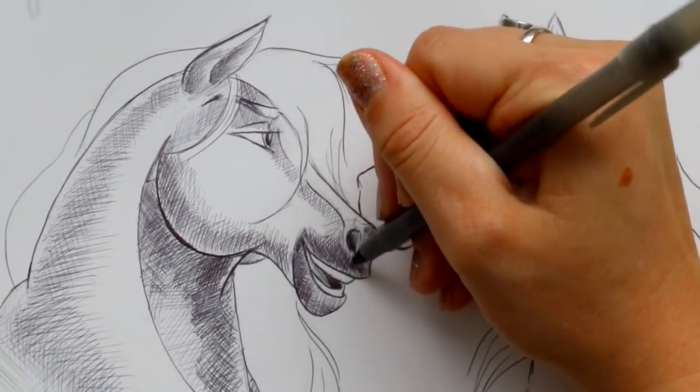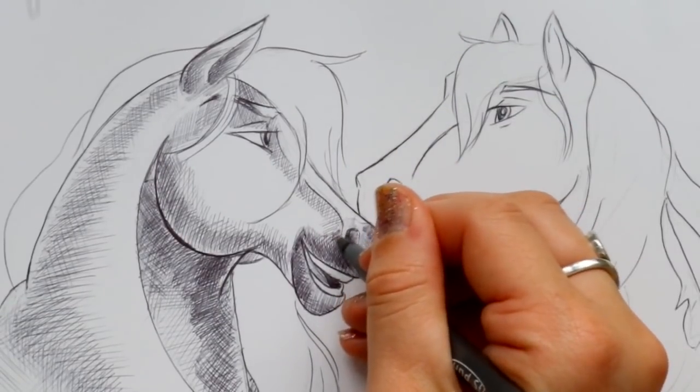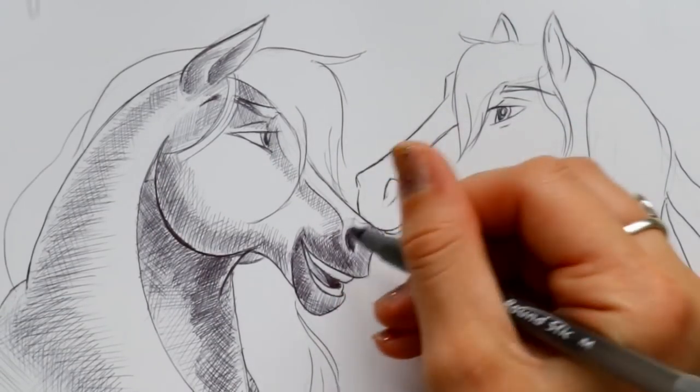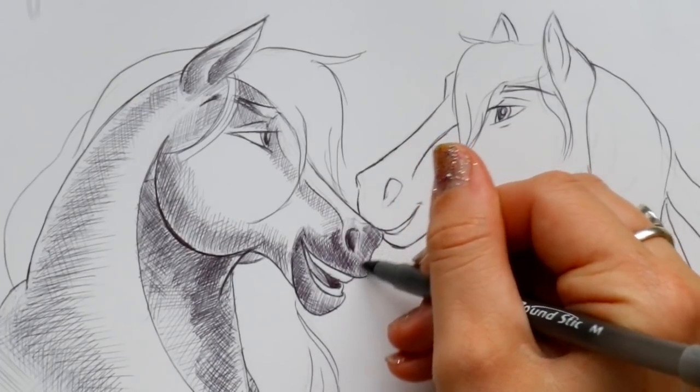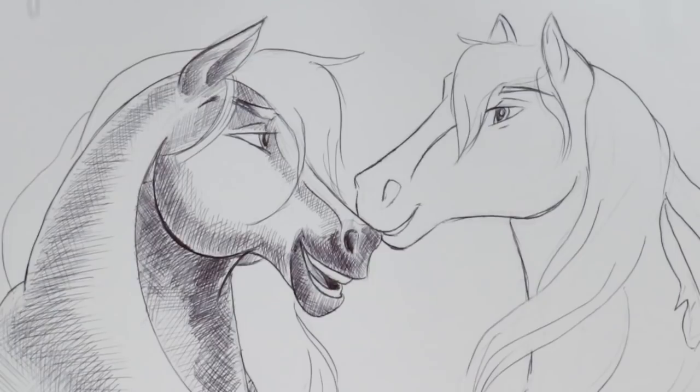Now I'm going to use the cross-hatching again. I'm going to go underneath his little nostril area. All right, there we go. There's his one muzzle.